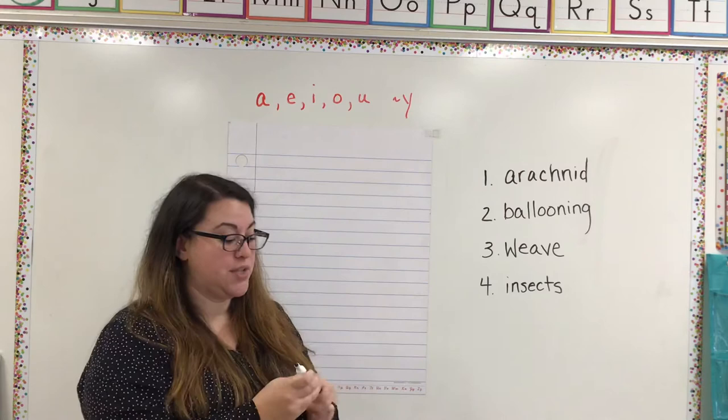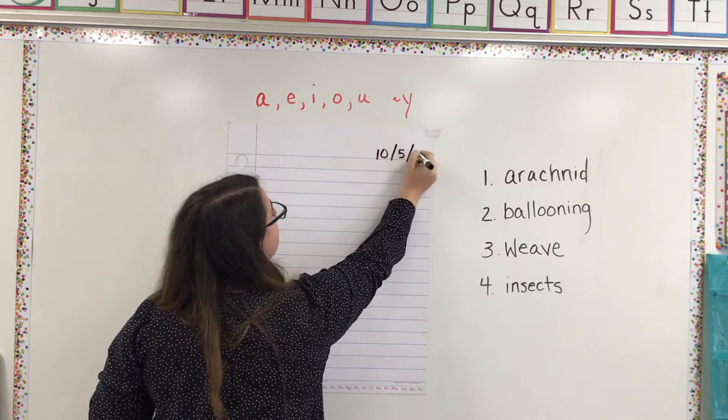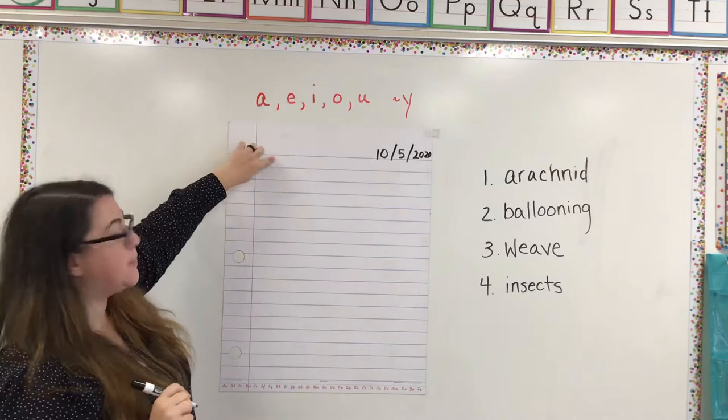So the first thing that we have to do is write the date. So it is 10, and today is the 5th, October 5th, and 2020.